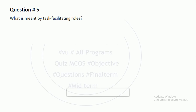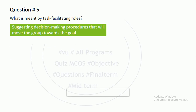What is meant by task facilitating roles? Task facilitating role means suggesting decision-making procedures that will move the group towards the goal. If someone has given you a task, you give suggestions to solve the problem and make decisions so your procedure can move towards your goals.